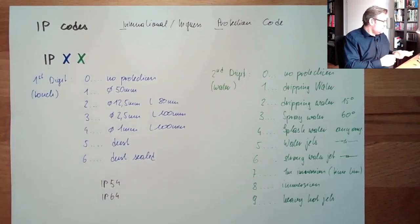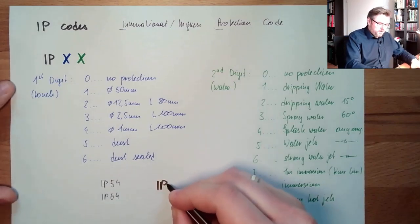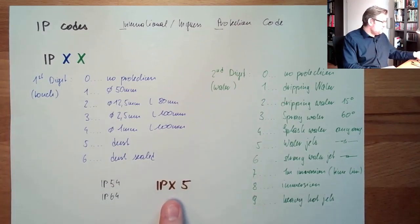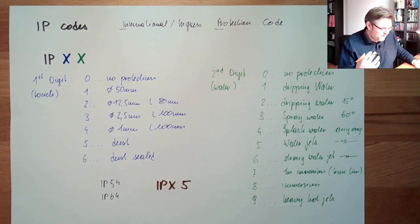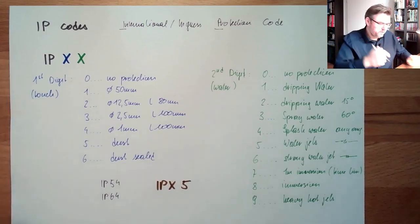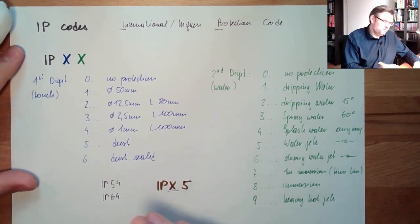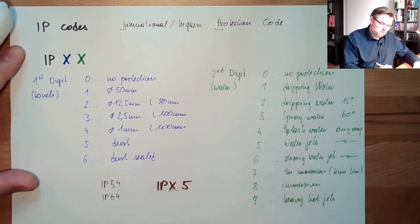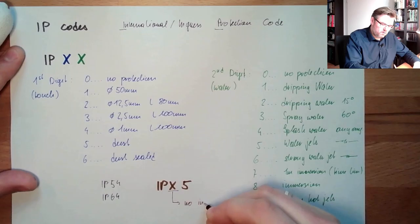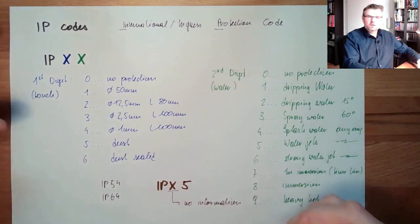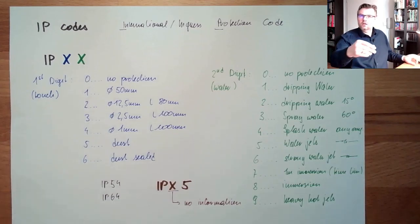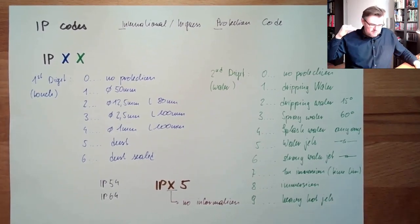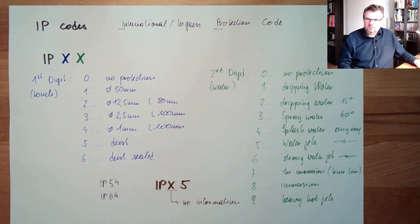Sometimes you see that there is written IPX5. And this X makes it look even more fancy than just IP. However, you know, this X here only means it's not defined. The first letter, there is no information given about the protection against touching, only against water. So this means nothing. This simply means no info. So it's not particularly fancy. It's just I'm not going to tell you. It's already sound a little bit with tendency. It maybe means it's not really important.